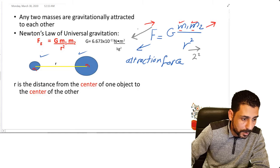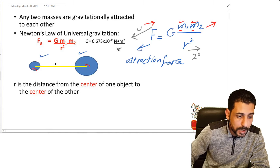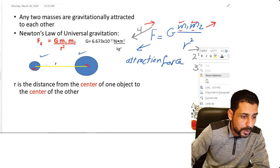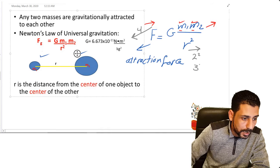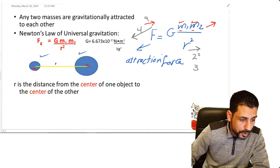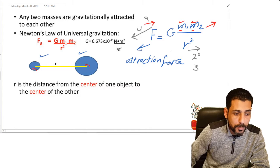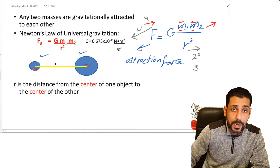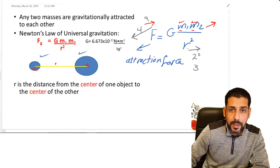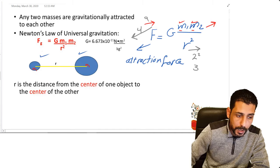If the distance is doubled, the force decreases four times — you divide it by four. If the distance is tripled, this force decreases by nine. So the attraction force is directly proportional to M1 and M2 and inversely proportional to the distance squared.